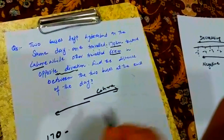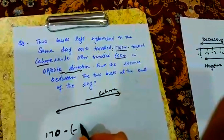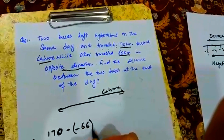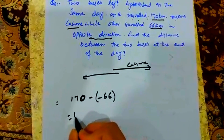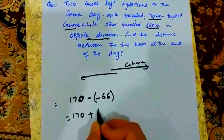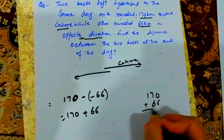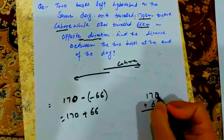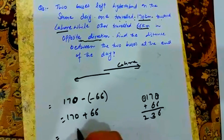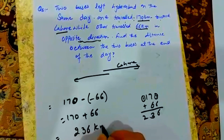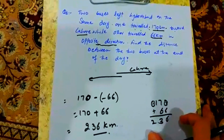We have distance to find. The other bus went in the opposite direction, so it is minus 66. The calculation is: 170 minus (minus 66), which becomes 170 plus 66. That gives us 236 km. So the distance between the 2 buses is 236 km.